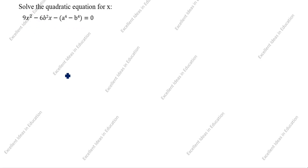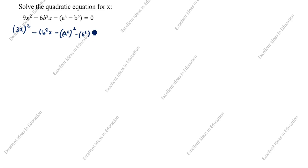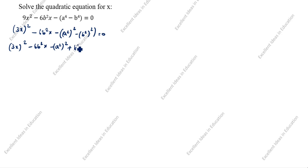How will we split this? 9x² is (3x)² — multiply 3×3=9, x×x=x². Minus 6b²x. Now how will we split (a² − b²)² equal to 0? Next step: (3x)² minus 6b²x. Now we will remove the bracket: minus a² squared, minus into minus gives plus b⁴, equal to 0.